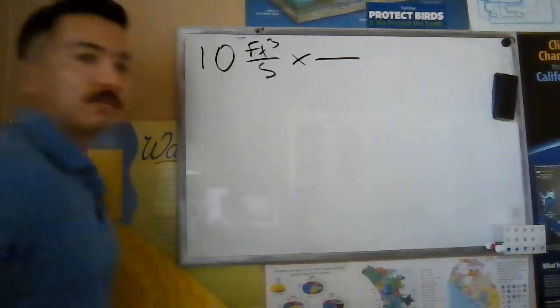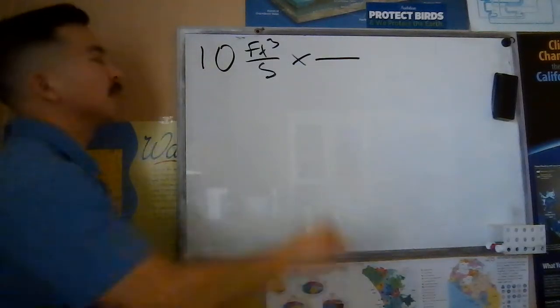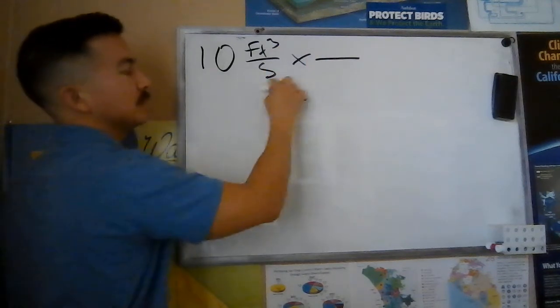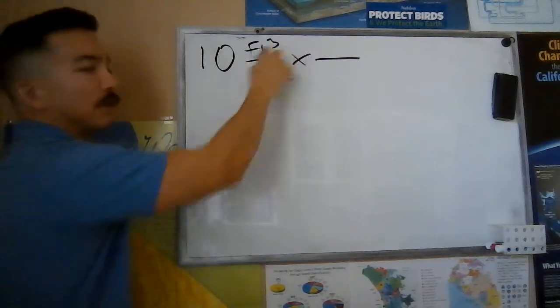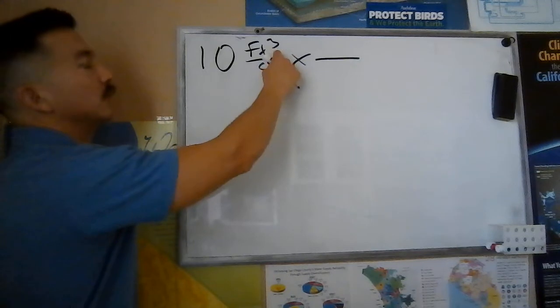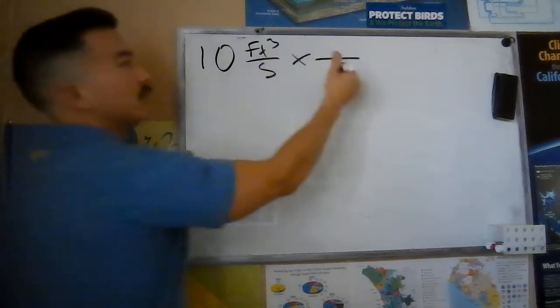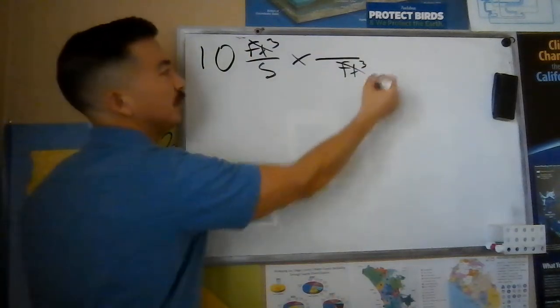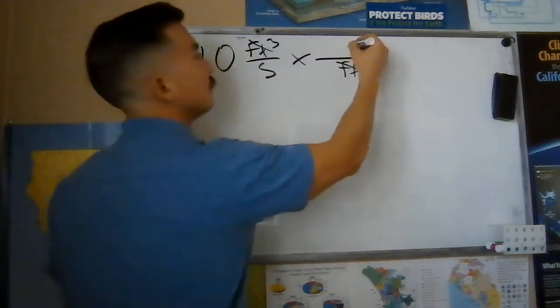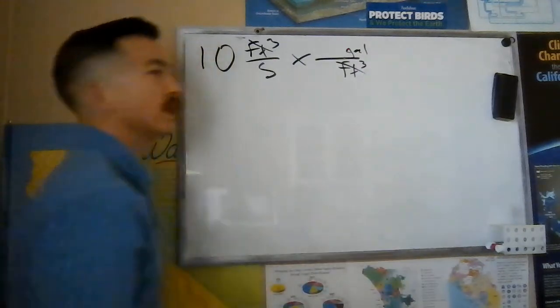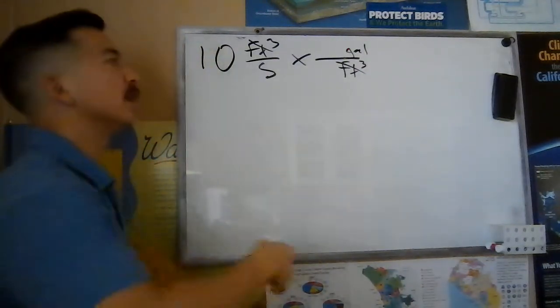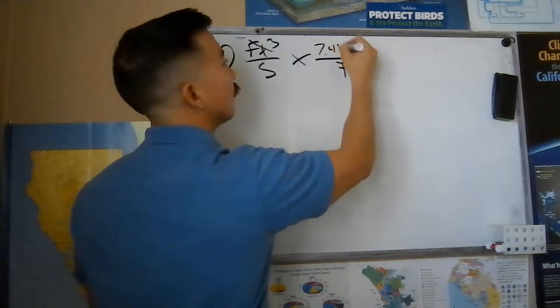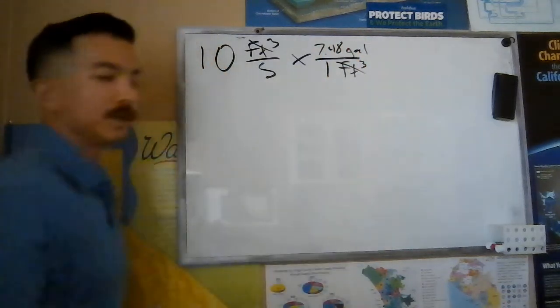We want to set up our conversion factor here and keep in mind we are going to need to convert cubic feet to gallons and seconds to minutes. So let's tackle the volume component first. In order to get rid of cubic feet up top I need to have cubic feet down below right here. I'm going to get rid of cubic feet as such and bringing in gallons. And then I need to pull out my conversion sheet. As you're starting to get familiar you'll memorize it. 7.48 gallons for every one cubic foot.